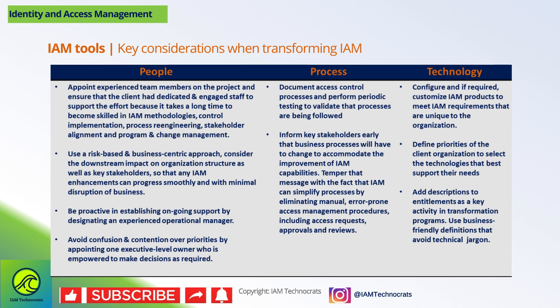Document access control processes and perform periodic testing to validate that processes are being followed. Inform key stakeholders early that business processes will have to change to accommodate improved IAM capabilities, and temper that message with the fact that IAM can simplify processes by eliminating manual, error-prone access management procedures, including access requests, approvals, and reviews. Configure and, if required, customize IAM products to meet requirements unique to the organization. Define priorities to select technologies that best support their needs. Add descriptions to entitlements using business-friendly definitions that avoid technical jargon.